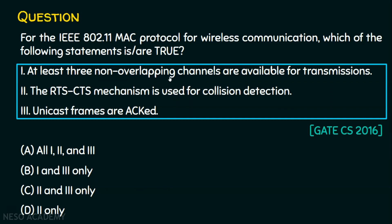At least three non-overlapping channels are available for transmissions. This is true because IEEE 802.11 uses 5 GHz radio frequency, which has 23 non-overlapping channels, whereas the 2.4 GHz frequency band has only three non-overlapping channels. So statement one is true, as at least three non-overlapping channels are available for transmission in IEEE 802.11.